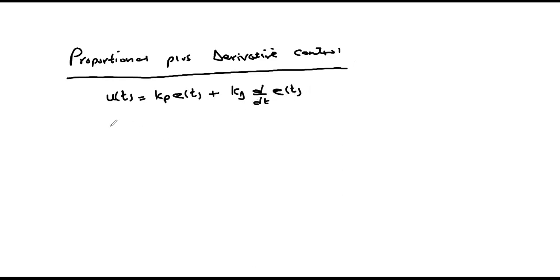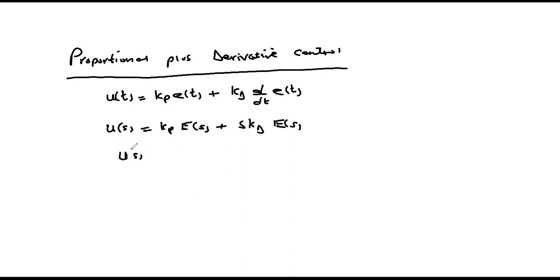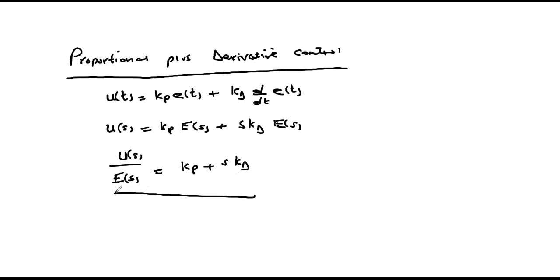In Laplace form, u(s) = kp·e(s) + s·kd·e(s), from which the controller transfer function is defined by u(s)/e(s) = kp + s·kd. This is the mathematical description of the PD controller.